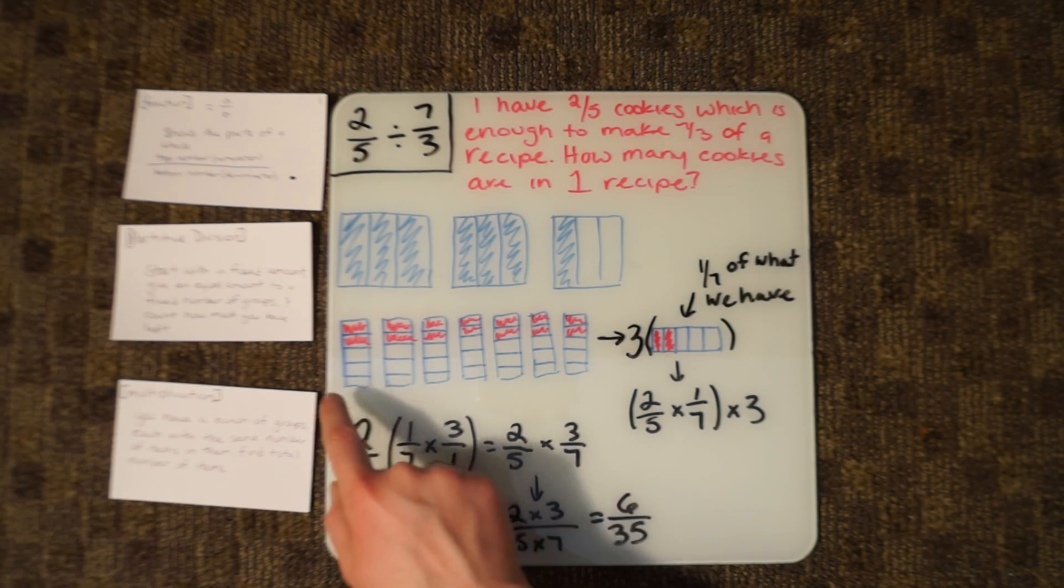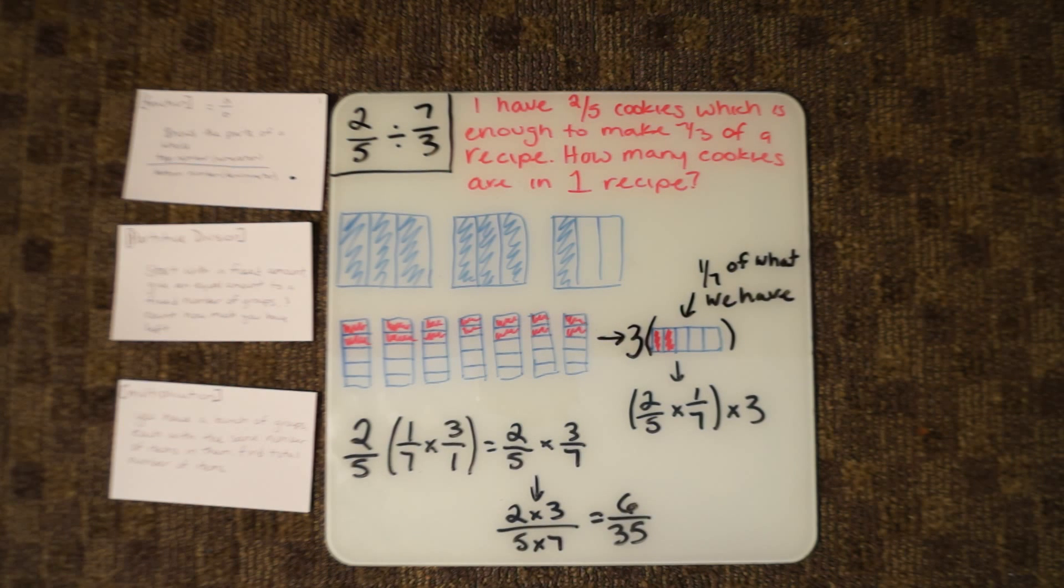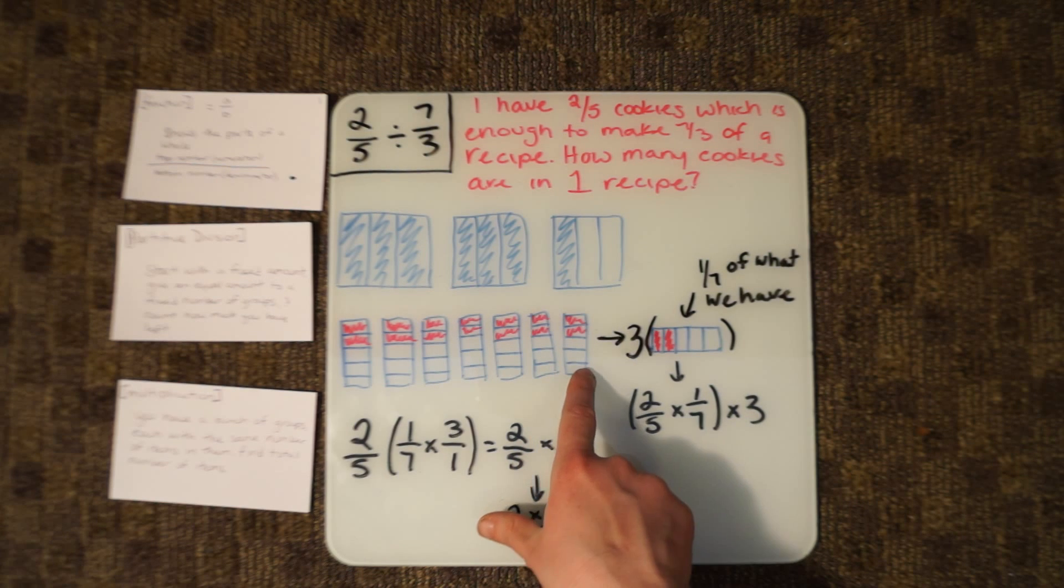Each of these slivers represents one recipe, and we shade in 2/5 of that. Now we only want to focus on one of these since one is one recipe. Move this over and work with one.